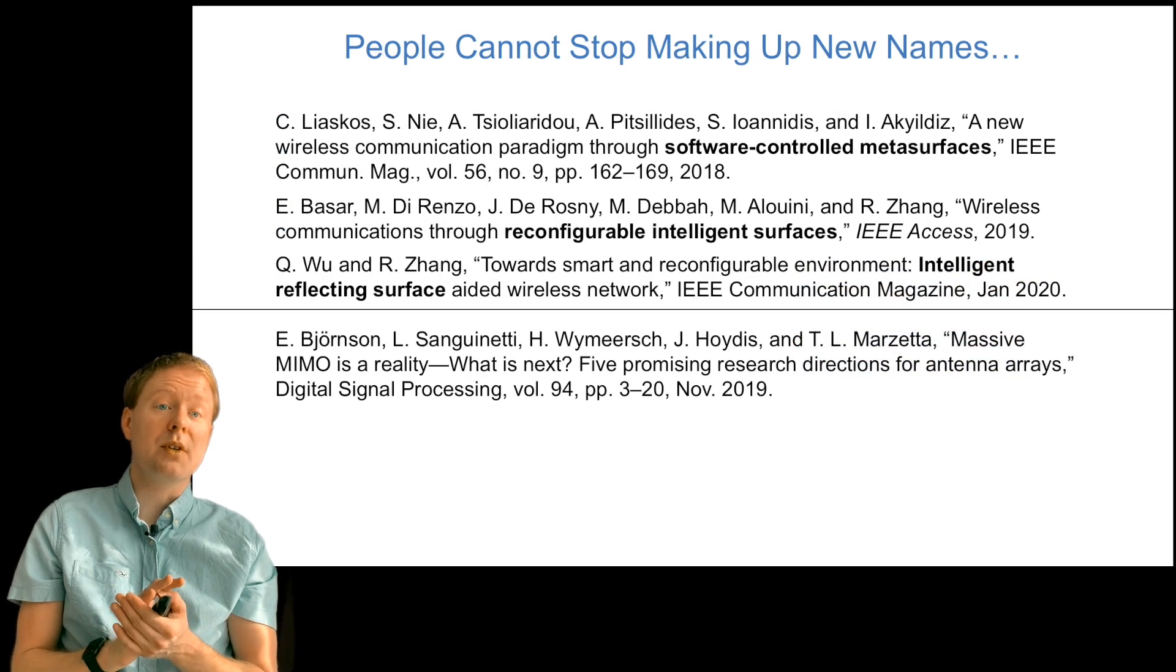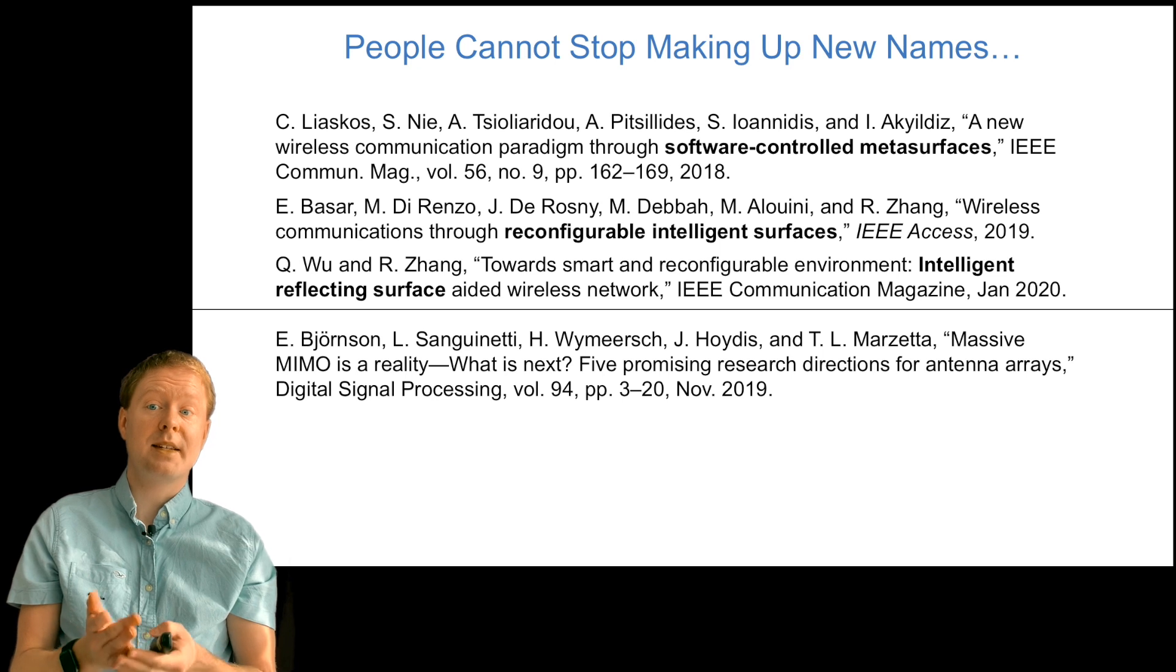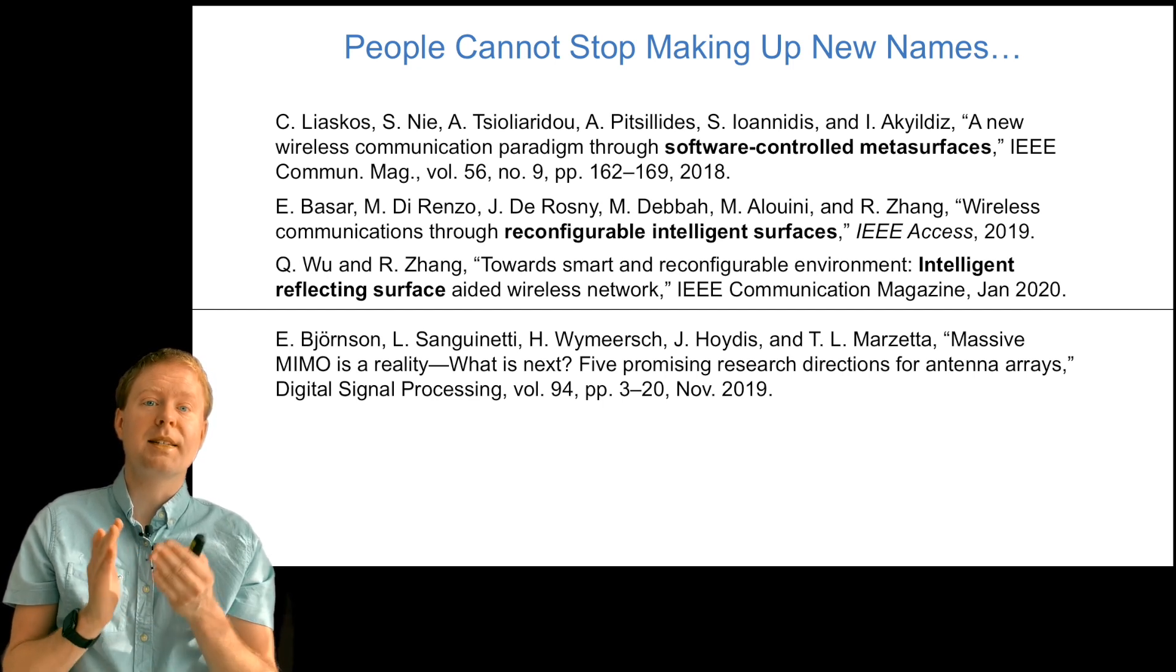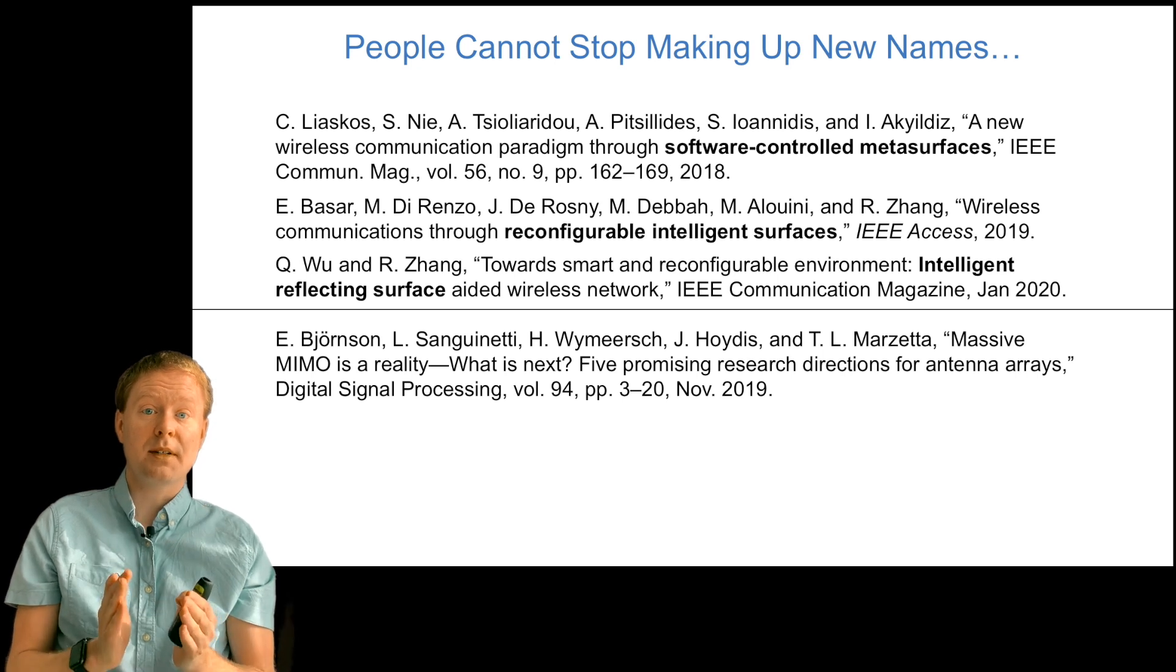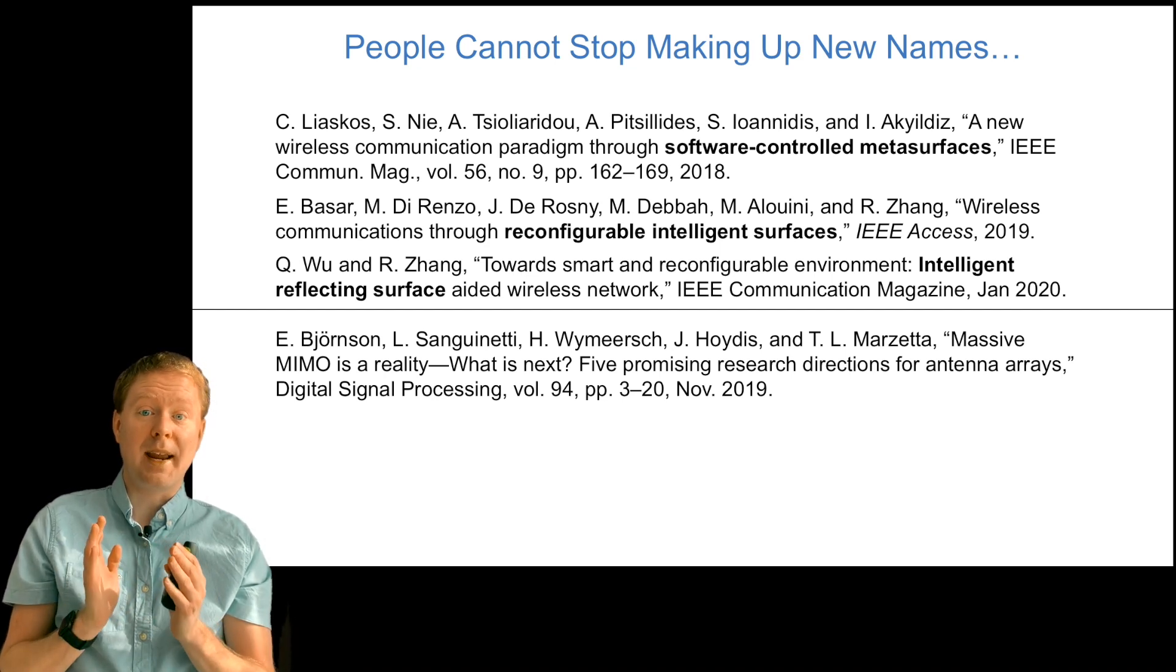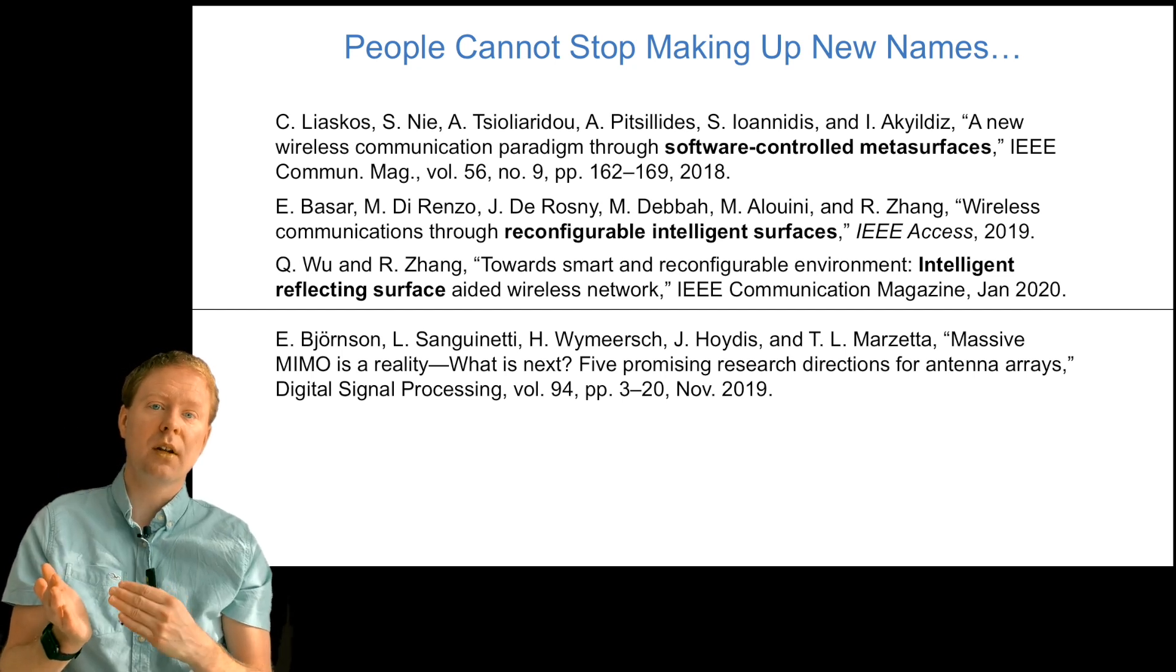People can't really stop making up new names to this concept. In addition to reflect arrays, software control meta-surface has been used, reconfigurable intelligent surfaces as in the title of this talk, intelligent reflecting surfaces. In the remainder of this talk, I will call it intelligent reflecting surface, because I think that is telling the most of what it is. It is a surface that is intelligent in the sense that we can control it. And what can we control? Its reflective conditions. This is not a specular reflection in general, but reflection in a wider sense - how is an incoming signal going to bounce off it?